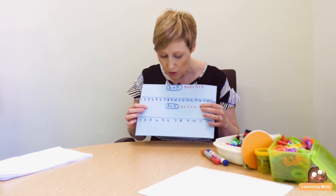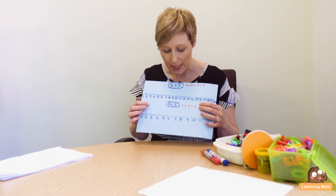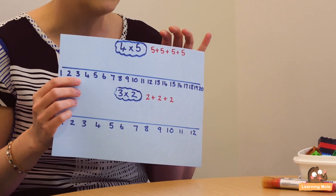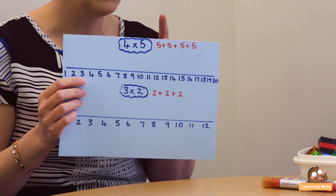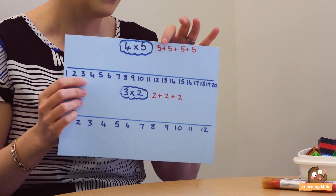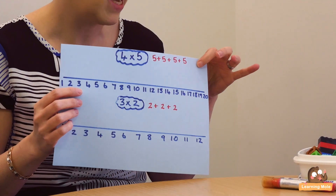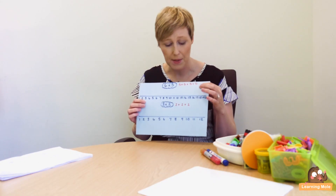You can actually get your child to design their own number lines, which can be really fun. So basically, I've written a multiplication calculation, and what you'd want to do is talk to your child about what that calculation actually means — ascertaining that they understand that four times five is the same as four groups of five, or four lots of five, which is the same as five plus five plus five plus five.